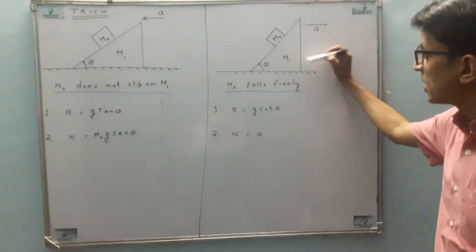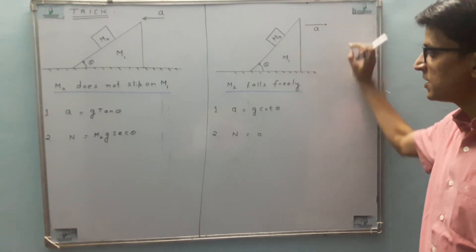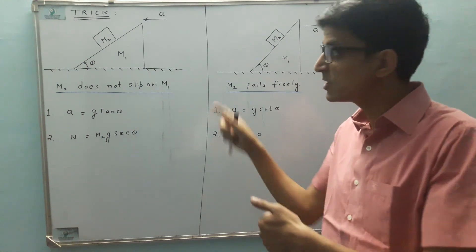Similarly, sometimes m2 falls freely. So if it falls freely, then you will have to use g cos θ for normal reaction. You will verify these results, I will show you.